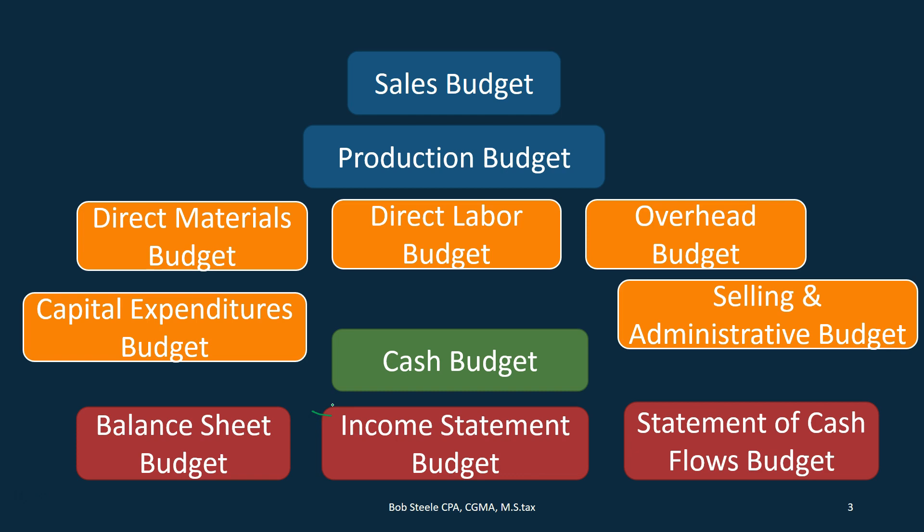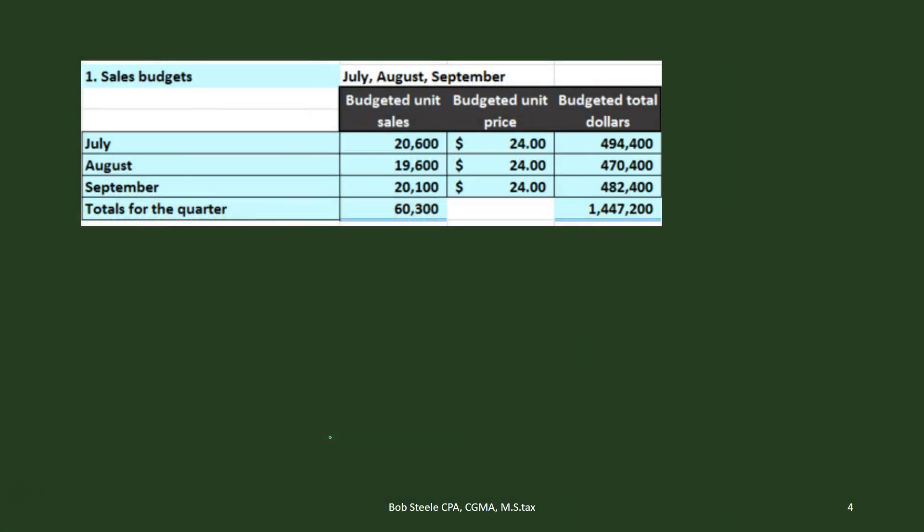Now we're going to move to one of the major statements — of course, one of the major statements we think of when we think of the budget — and that's the income statement. Because we're usually thinking about how we're going to perform over time, and that's what the income statement tells us: the timing of how we're doing. So that's what we're going to move to at this point.